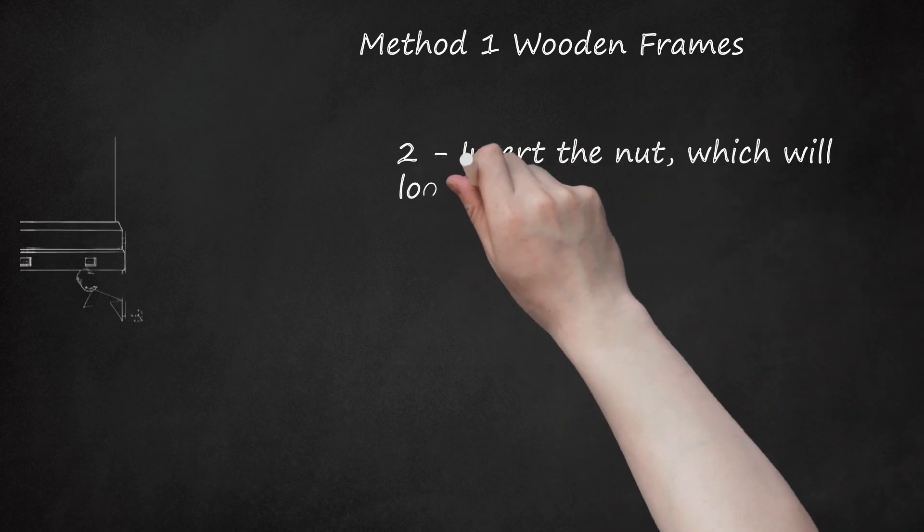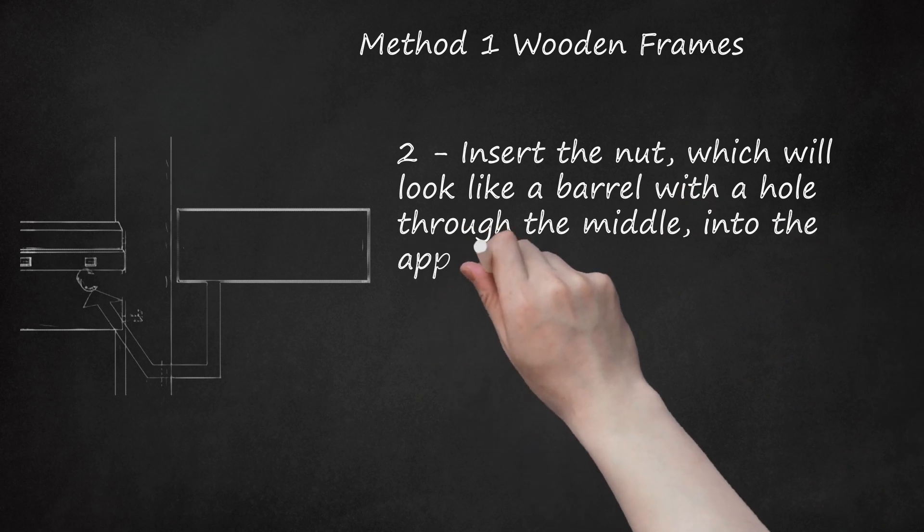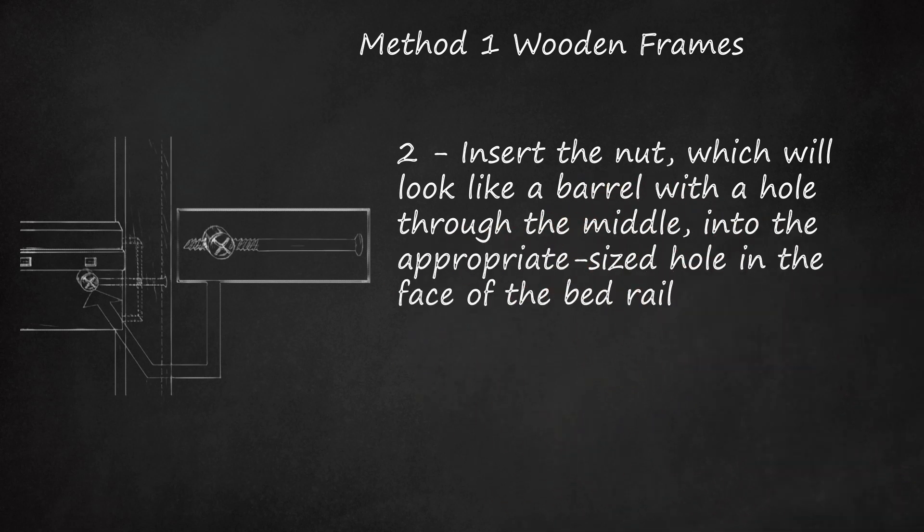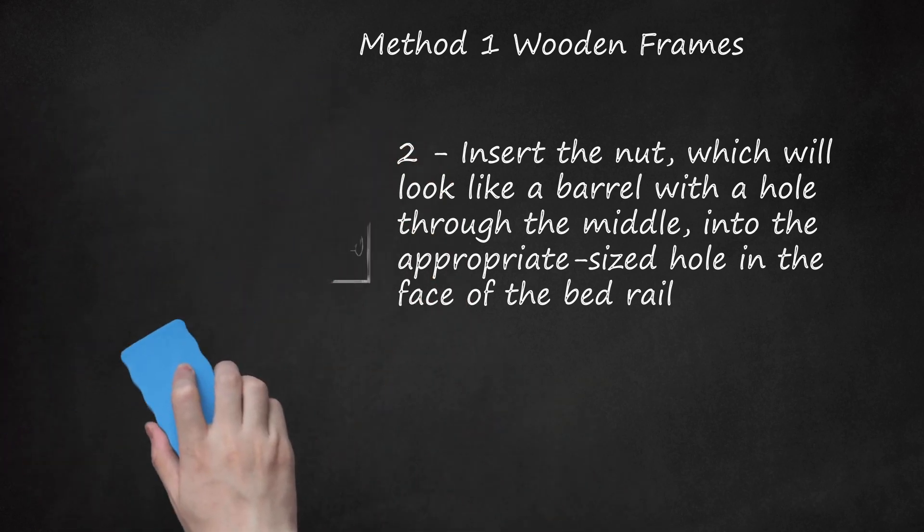Step 2: Insert the nut, which will look like a barrel with a hole through the middle, into the appropriate sized hole in the face of the bed rail. The length of the barrel nut will run perpendicular to the length of the bed rail. Insert the nut so that the screwdriver grooves face outward and are visible.